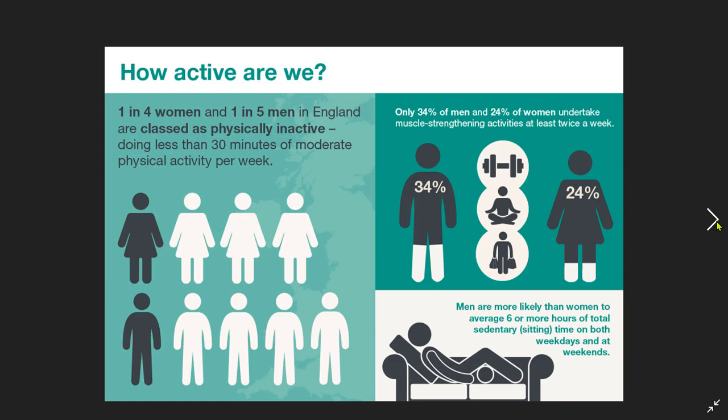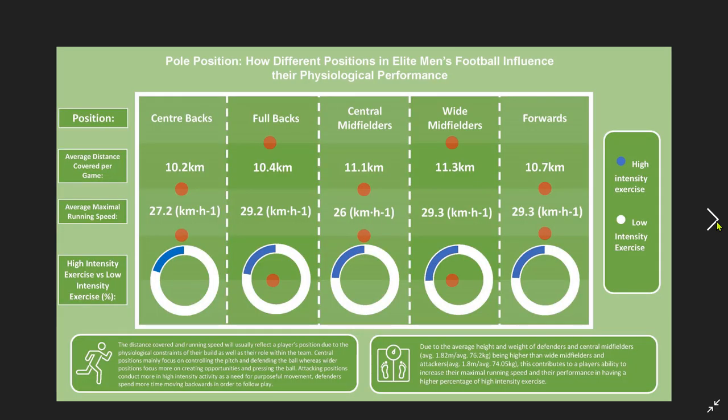In this example — 'How active are we?' — it's a question, but it's actually referring to the amount of inactivity going on. On the right-hand side, only 34% of men and 24% of women undertake muscle-strengthening activities. They're showing activities between males and females, reinforcing the messages with imagery. This next example is a great use of doughnuts, being used to show high-intensity versus low-intensity exercise, with a key indicating high and low for different positions in the game.